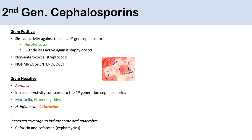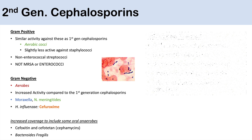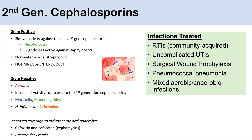Some second-generation cephalosporins have increased coverage for oral anaerobes, particularly cefoxitin and cefotetan, also known as cephamycins — a subcategory of second-generation cephalosporins with coverage of Bacteroides fragilis. Infections treated include community-acquired respiratory tract infections, uncomplicated UTIs, surgical wound prophylaxis, pneumococcal pneumonia, and mixed aerobic and anaerobic infections, especially with the cephamycins cefoxitin and cefotetan.